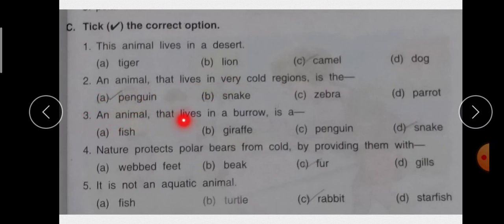Third है an animal that lives in a burro is a. कि इन में से कौन सा animal जो है hole में रहता है? Fish, giraffe, penguin, snake. तो correct answer है D that is snake.